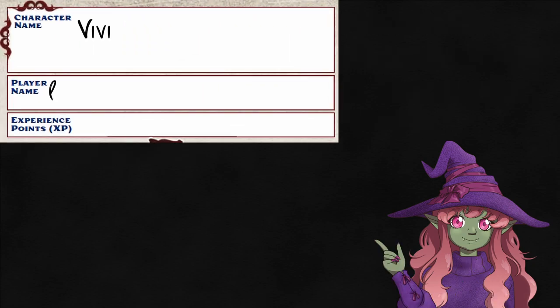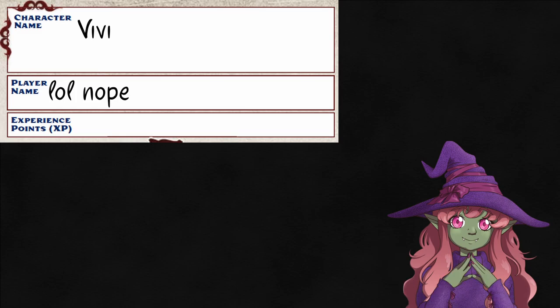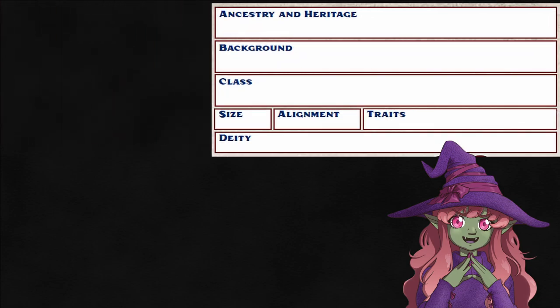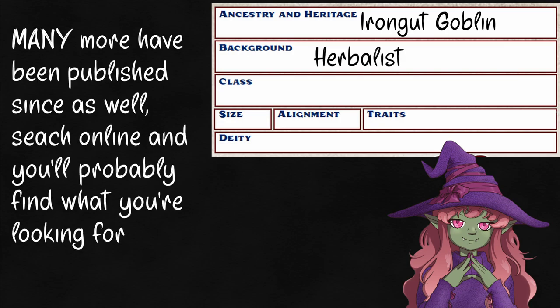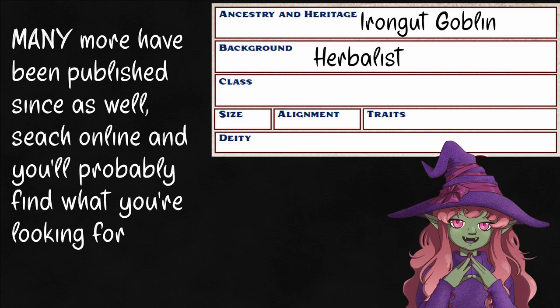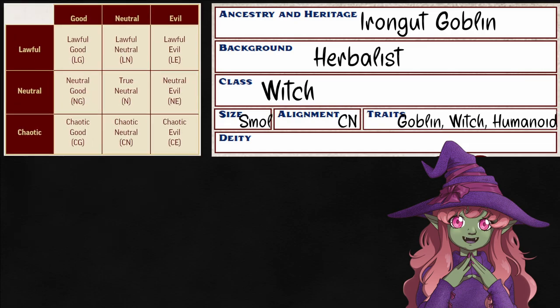At the top we have the name of our character, the name of you, and the tracker for XP. Write down what you get if you use XP, draw a snail or something if you don't. Ancestry is your general species, like goblin. Heritage is your subspecies, like rock dwarf or wooden elf. Your background is your profession, where you came from — it's actually really important in this one; you'll find the list on page 60 of the core rulebook. Class is where you get your power — there are 12 in your core rulebook but 22 officially published, and incredibly customizable. Size is your bigness, and alignment is where you fall on that chart of lawful to chaotic, good to evil.